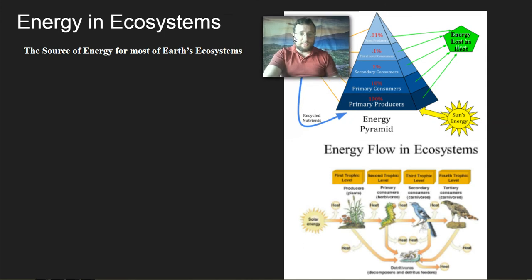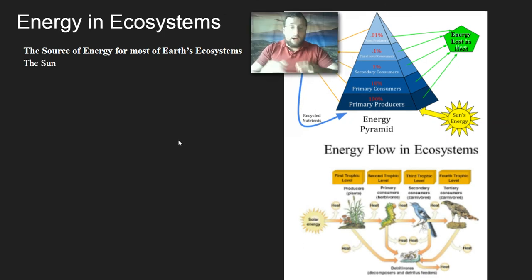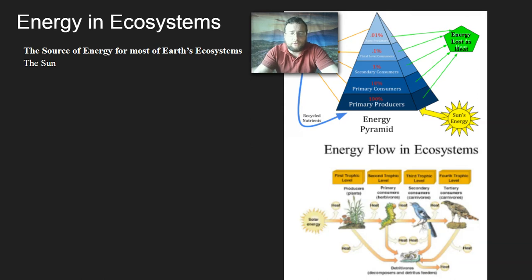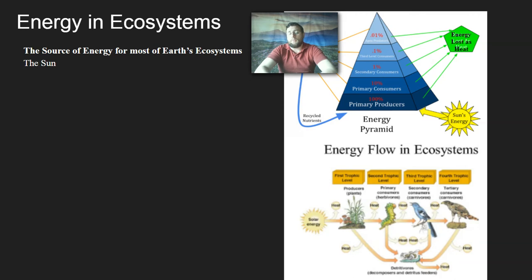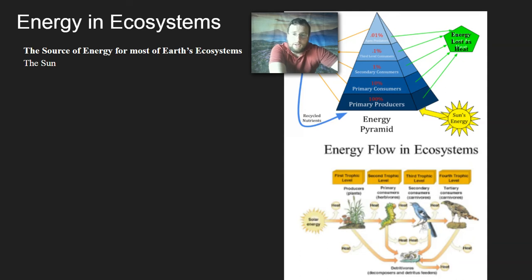The source of energy for most ecosystems on Earth is the sun. There are exceptions — life forms living in extreme environments like near volcanic vents, very salty or very acidic environments, called thermophiles, acidophiles, and halophiles. There are autotrophs in those environments that do not use sunlight; they're called chemotrophs because they make their food out of chemical processes not based on photosynthesis. They are descended from the ancient life forms of Earth that existed before photosynthesis, and they're still around colonizing extreme environments.